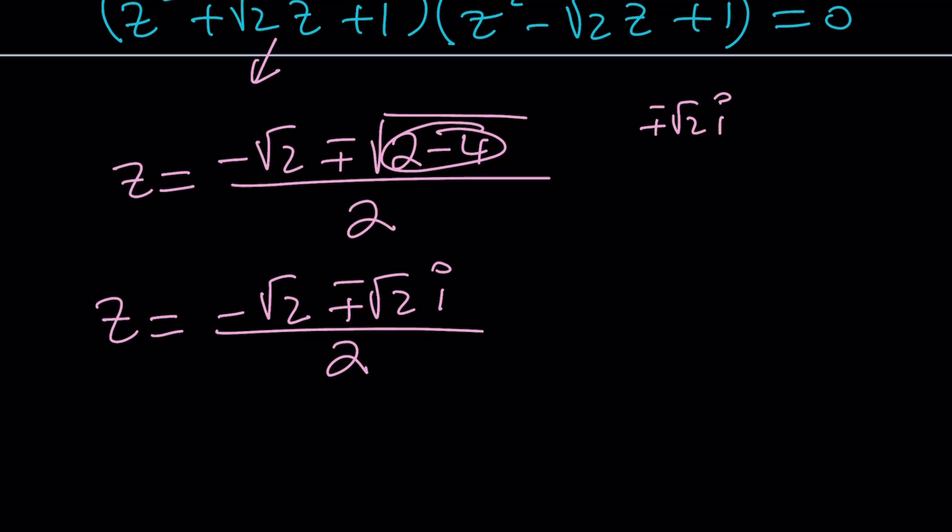You can split it up and write the solutions as z equals negative root 2 over 2 plus root 2 over 2i, and z sub 2 equals negative root 2 over 2 minus root 2 over 2i. If you look at these numbers very carefully, they look like cosine 45 degrees and sine 45 degrees with some sign changes. You have to put it in different quadrants.